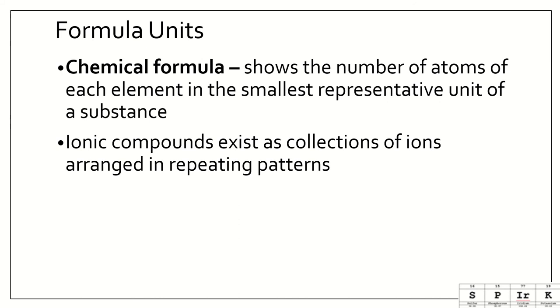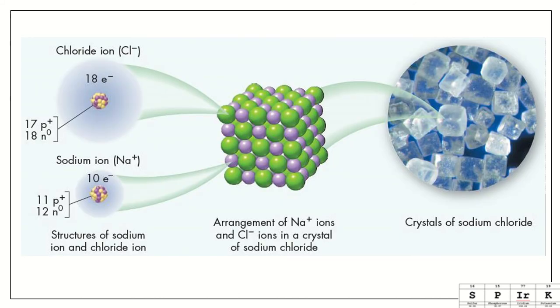So ionic compounds exist as collections of ions arranged in repeating patterns. So for example, sodium chloride, you can see here that the green spheres are the chlorine or the chloride ion, and the sodium ions are the purple. You can see here that this is one unit of sodium chloride, but then we see many units of sodium chloride, and they are arranged in a very specific pattern, and the way that they are arranged for sodium chloride is this crystal structure of a cube, and that is why when we look at crystals of sodium chloride, they are cubic in shape.